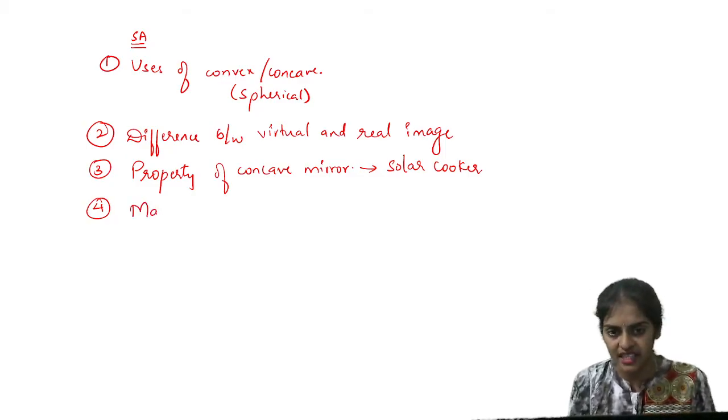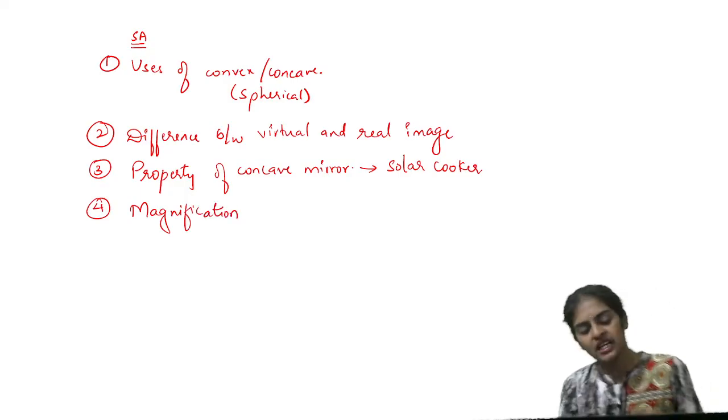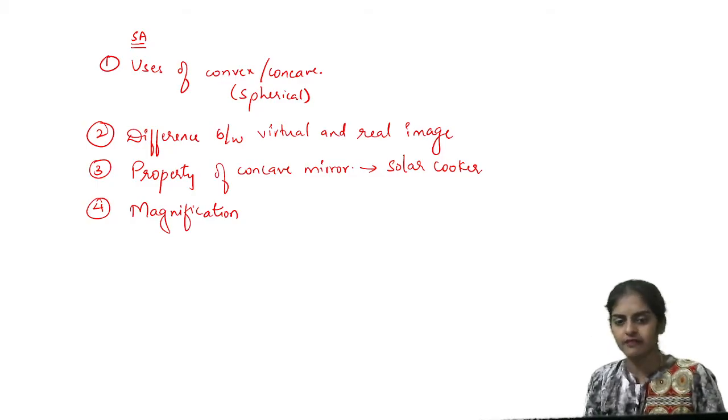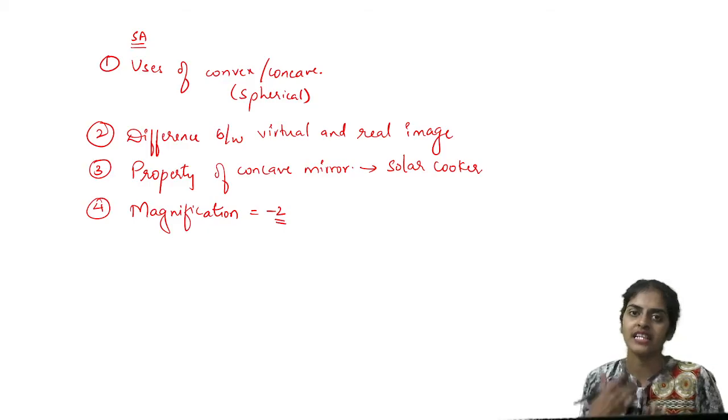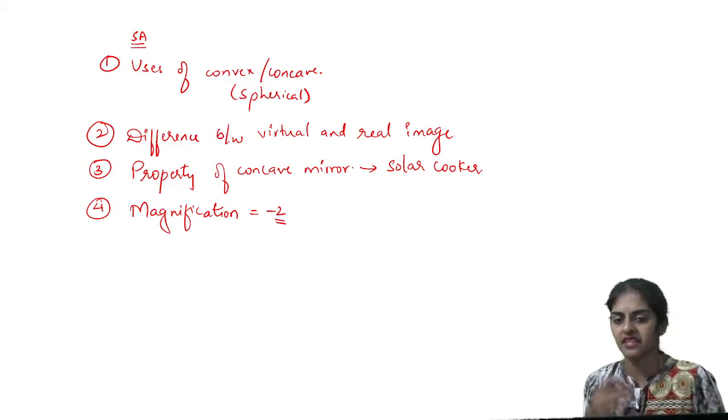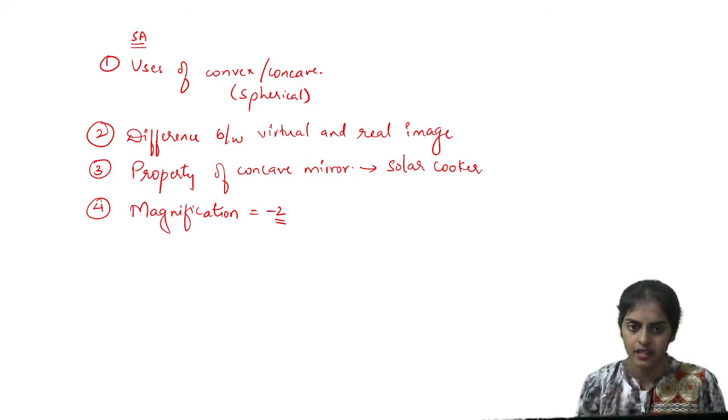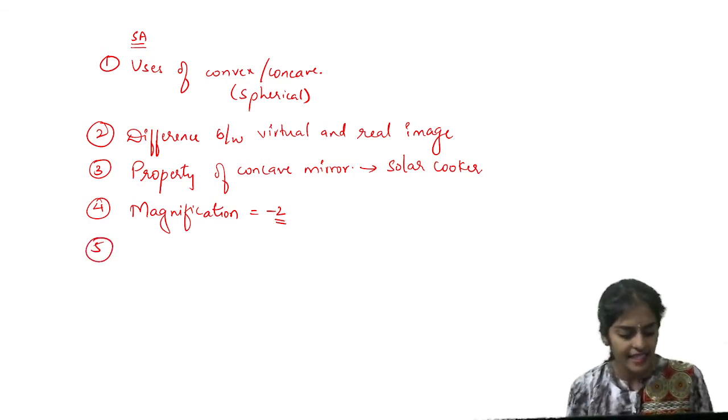And next, what is magnification? Magnification question is, there is a direct formula. If magnification of any object is, say, minus 2, then what is the nature of the object? Magnification minus 2 means there is an object. There is real, inverted, enlarged.